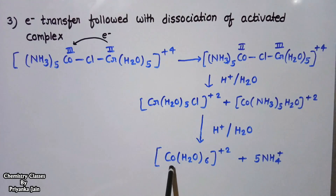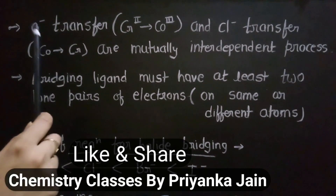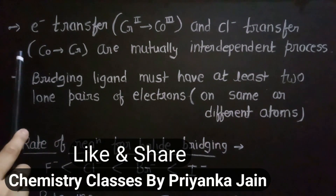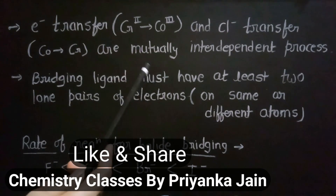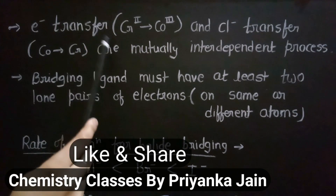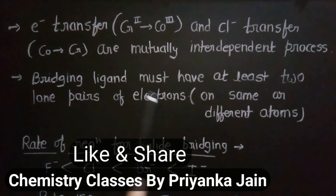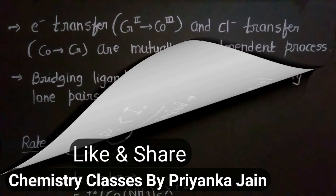Some important points about the inner sphere reaction mechanism: First, the electron transfer from Cr²⁺ to Co³⁺ and the ligand transfer — i.e., chloride ion transfer from Co to Cr — are mutually interdependent processes; both occur simultaneously and neither is possible without the other. Second, the bridging ligand must have at least two lone pairs of electrons, which may be on the same atom or different atoms, as these electrons facilitate the redox reaction.